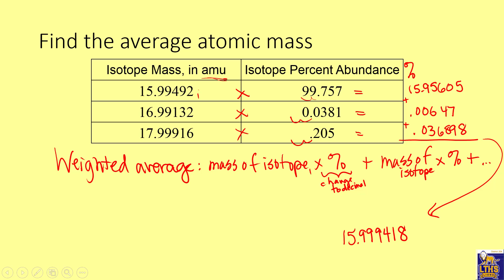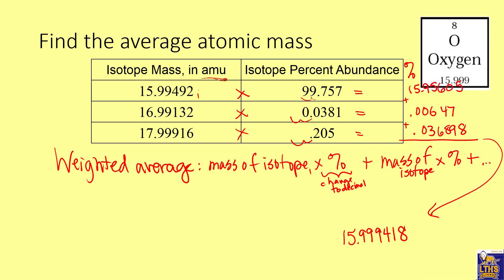So what element has an average atomic mass of 15.9999418 amu? You can check the periodic table — it's oxygen! The calculated average atomic mass based on each isotope's mass times its percent abundance matches the average atomic mass shown on the periodic table. That's why some periodic tables show 16.00 as the average atomic mass for oxygen — it rounds to 16.00.